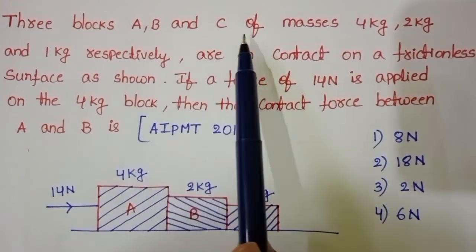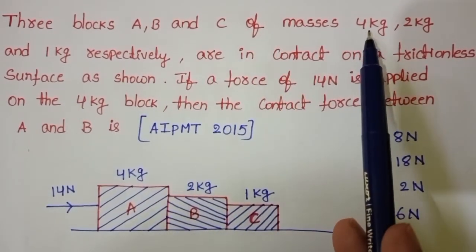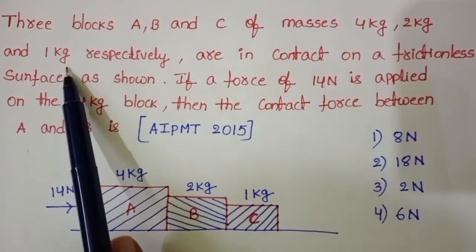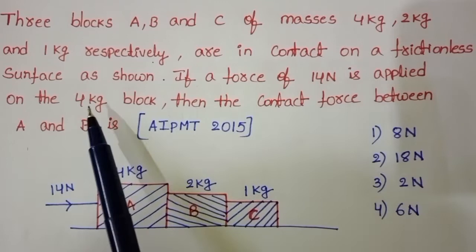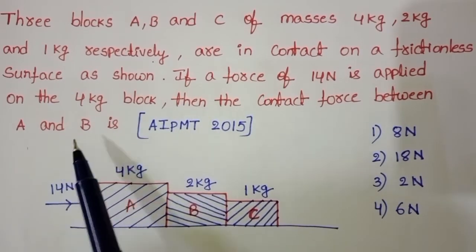Three blocks A, B and C of masses 4 kg, 2 kg and 1 kg respectively are in contact on a frictionless surface as shown in the figure.